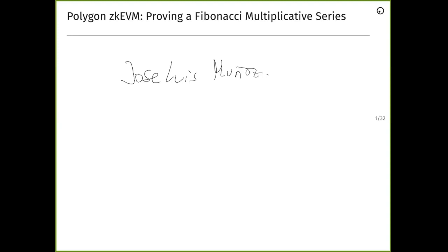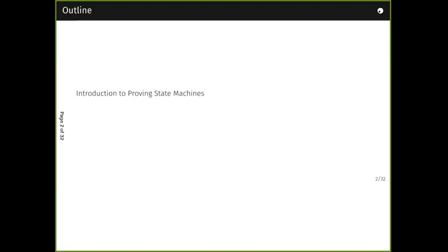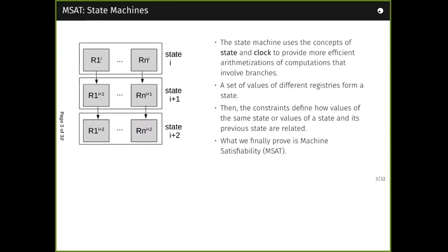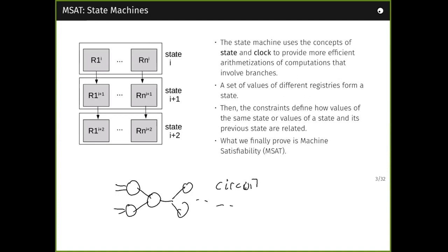Then Haichen will do the same but for a circuit model based in Halo 2. I will try to explain and highlight the differences whenever possible. You can interrupt me at any time and ask a question live. Today is like the 'hello world' example of proving something built in the model of a state machine. Maybe you are more used to the circuit model, in which you have inputs, gates, and those gates have outputs which are the inputs of other gates.